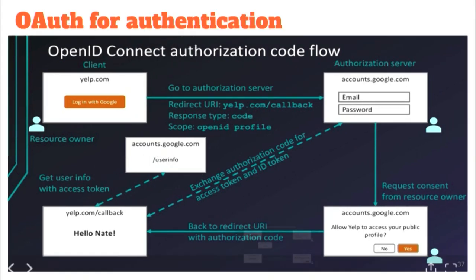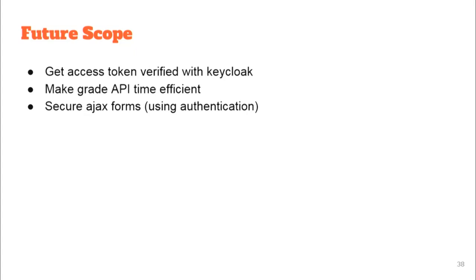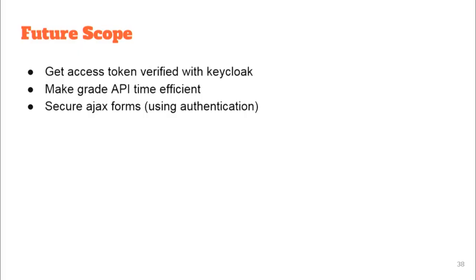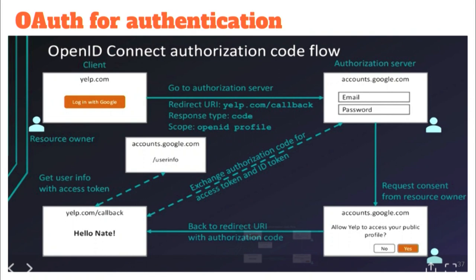For future scope: the grade API is not time-efficient because the database has a tree-like structure and we know only the object ID for the last layer, meaning the entire tree must be traversed for each query. Regarding Keycloak integration, we were able to complete all steps except the last — exchanging the access token. The Keycloak documentation is not thorough, so we have the token but the exchange step is not yet working.